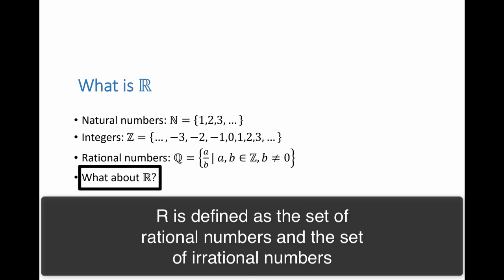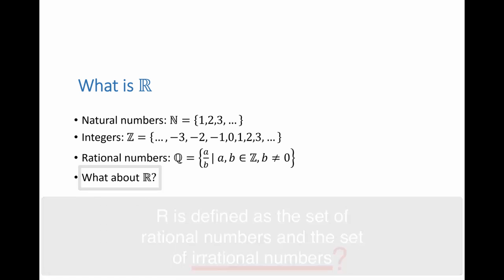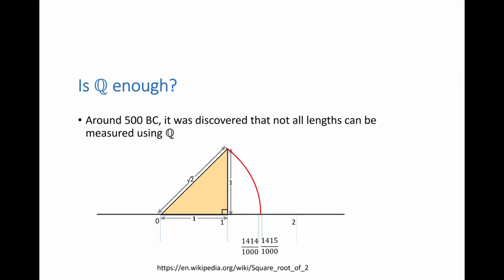The set of real numbers is defined as the set of rational numbers and the set of irrational numbers, but we have not defined what the set of irrational numbers is. And so let's investigate what the set of real numbers actually is. The question we have is, is the set of rational numbers enough to describe lengths? And it was around 500 BC that it was discovered that not all lengths can be measured using rational numbers. And it was discovered that root 2 is not a rational number. And what does this mean? It means if I draw this triangle with each side of length 1, then the hypotenuse has a length of root 2, and this root 2 cannot be measured using a rational number.